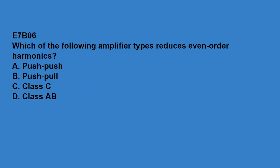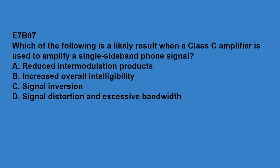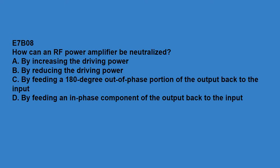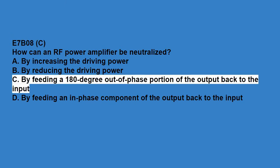E7B06, which of the following amplifier types reduces even order harmonics? Push-pull. E7B07, which of the following is a likely result when a class C amplifier is used to amplify a single sideband phone signal? Signal distortion and excessive bandwidth. E7B08, how can an RF power amplifier be neutralized? By feeding a 180 degree out of phase portion of the output back to the input.